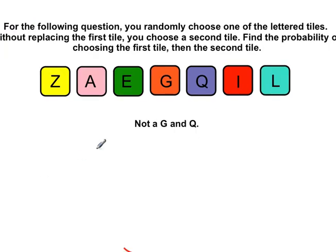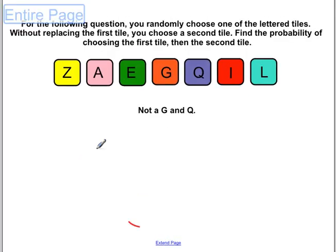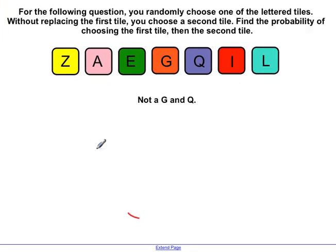All right, last question. For the following question, you randomly choose one of the letter tiles. Without replacing the first tile, you choose a second tile. Find the probability of choosing the first tile, then the second. Okay. So would this be independent or dependent? The first time you pull the tile, and then you're not replacing it. So the second time around, you don't have as many tiles in the group as you did when you first started. So that would be dependent because now you just took out one of the choices.